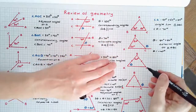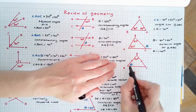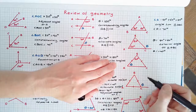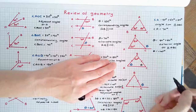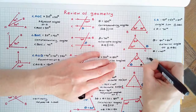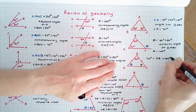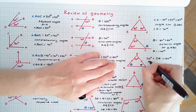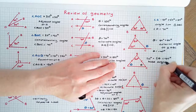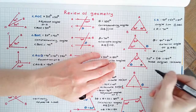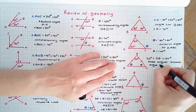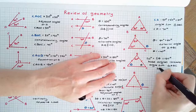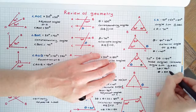An isosceles triangle has two or more equal sides called legs and equal base angles. Therefore if angle CAB is theta, angle BCA is also theta. We now know that 20 degrees plus 2 thetas equals 180 degrees, using the base angles of an isosceles triangle and the angle sum of triangle ABC. Solving this equation, 2 theta equals 160 degrees, therefore theta equals 80 degrees.